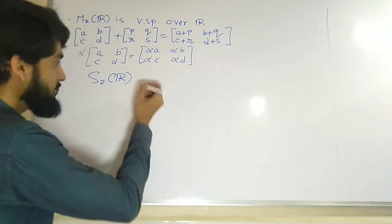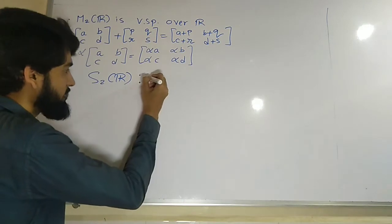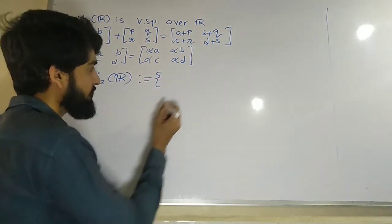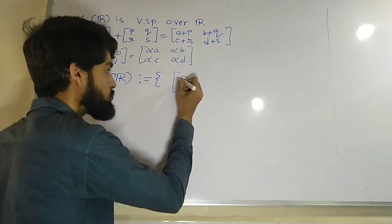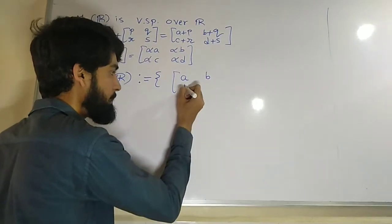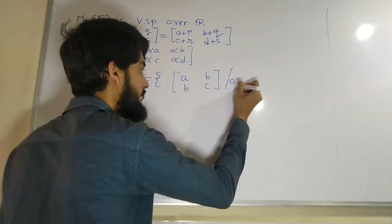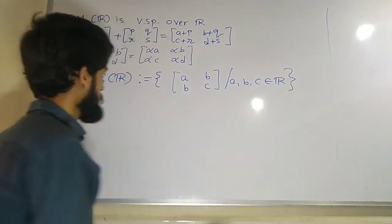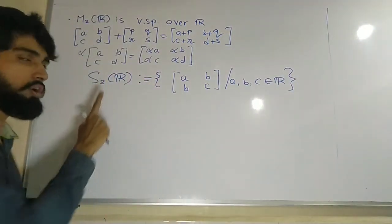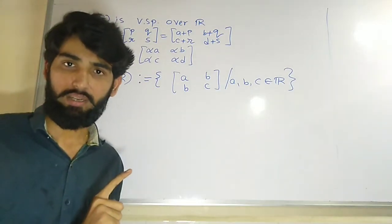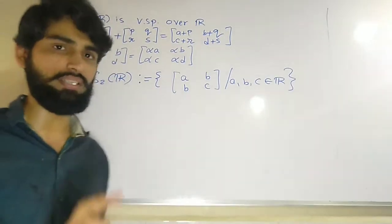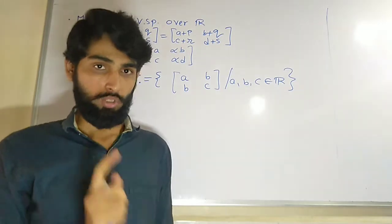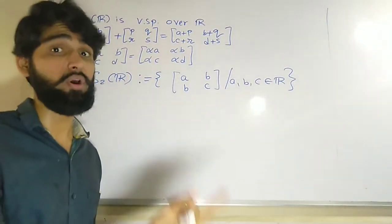That means if I want to define this set, then this set can be defined by a 2 by 2 matrix [a, b; b, c] where a, b, c are real numbers. So this is a subset of M2R, definitely yes, since every element of this is a 2 by 2 matrix over R. So the given set is a subset of M2R.